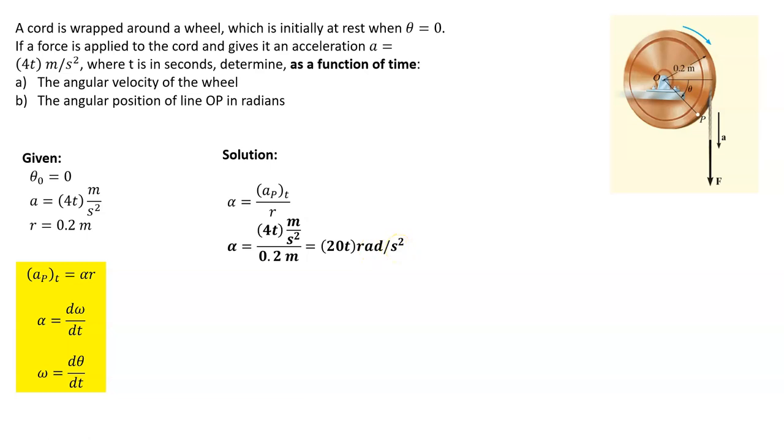So that's our angular acceleration, the function for our angular acceleration. Now we also know that our angular acceleration, the second equation, is the derivative of our angular velocity with respect to time. So we can go ahead and solve that for dω - dω is equal to alpha dt, multiplying both sides by dt.